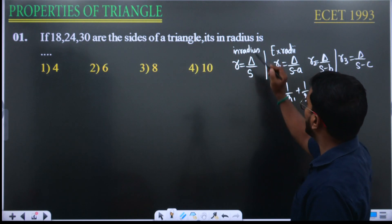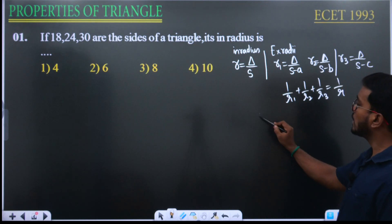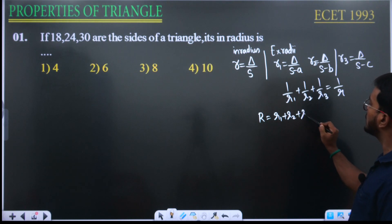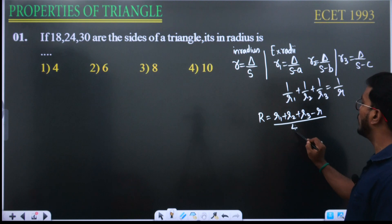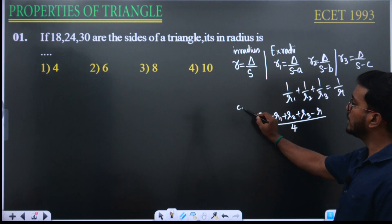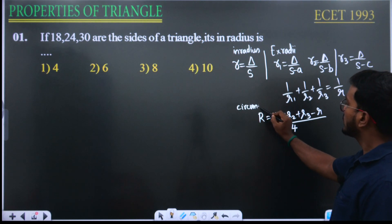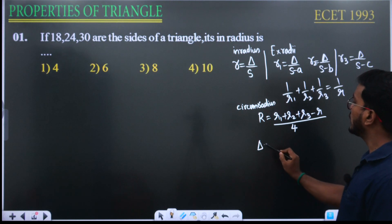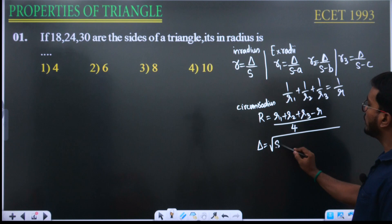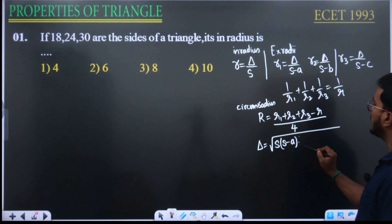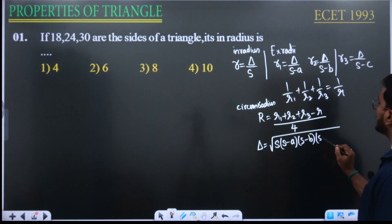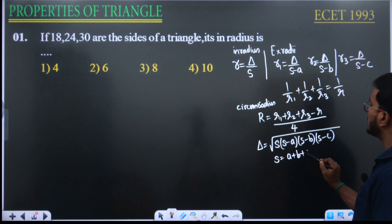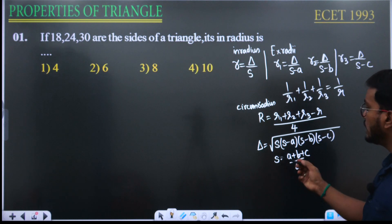You can also write the circum-radius formula: R equals (r1 plus r2 plus r3 minus r) divided by 4, where capital R is the circum-radius. And delta equals root of s(s minus a)(s minus b)(s minus c), where s equals (a plus b plus c) divided by 2.